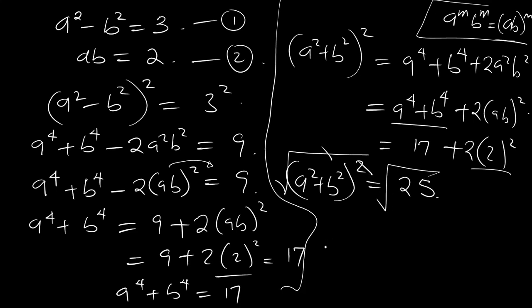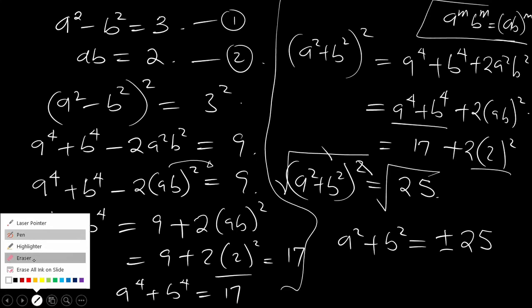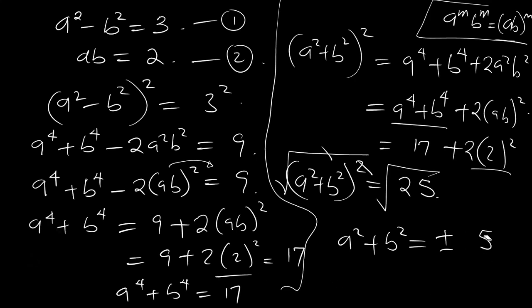Taking the square root of both sides, the squares cancel and you are left with a squared plus b squared equal to plus or minus 5, because the square root of 25 is 5.